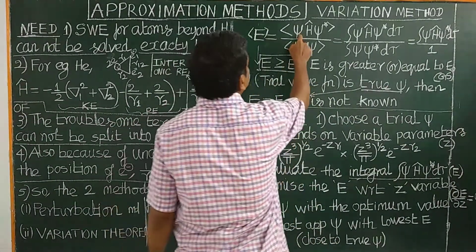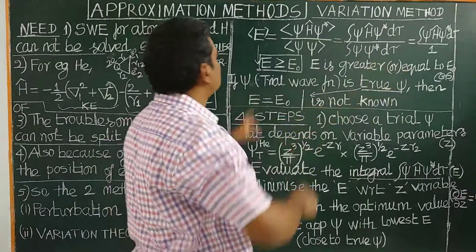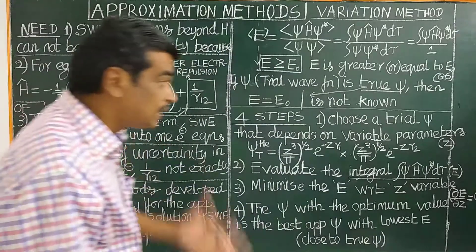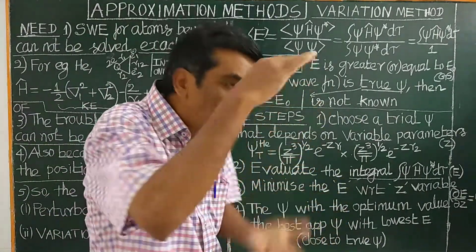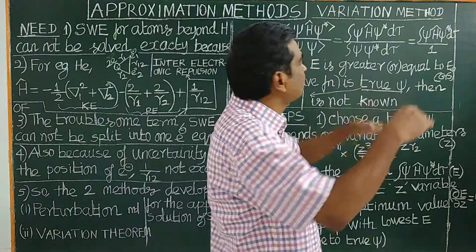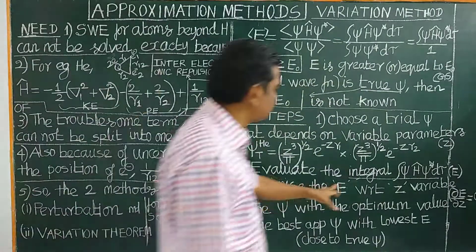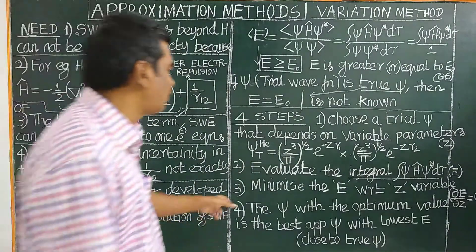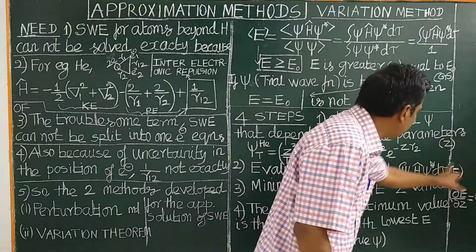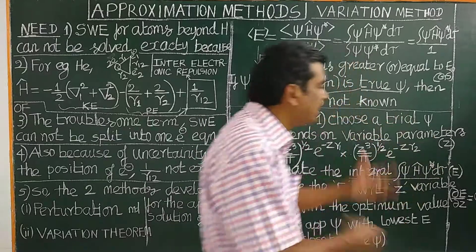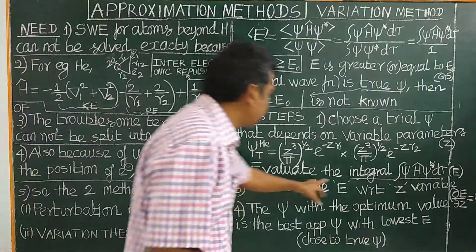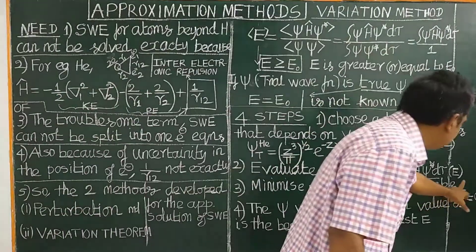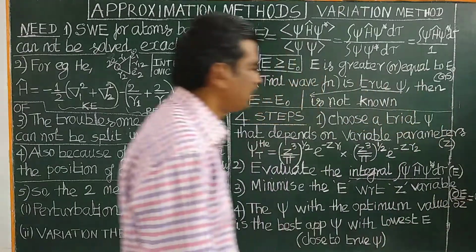Step two — evaluate the integral. You know the wave function, Hamiltonian operator, and complex conjugate, so you can evaluate the integral to obtain the value E — the average value of energy. The energy obtained is always an upper bound, greater than the ground state energy. Therefore, step three — minimize the energy with respect to the variable parameter. By changing the variable parameter, the energy is lowered. That energy equal to the lowest state energy is obtained by the mathematical condition: ∂E/∂Z = 0.